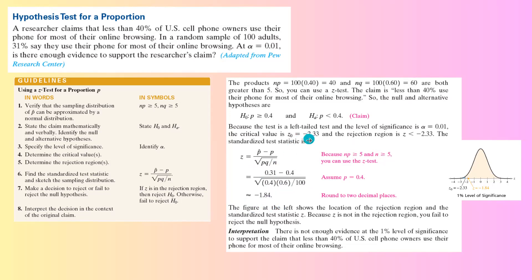Comparing these two numbers, negative 1.84 is not less than this number. It's larger than this number. So it means that your standardized test statistic is outside the rejection region. Since Z is outside the rejection region, you're going to say that I fail to reject the null hypothesis, or we support the null hypothesis.